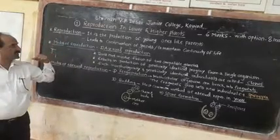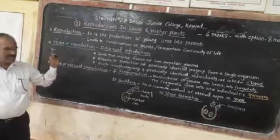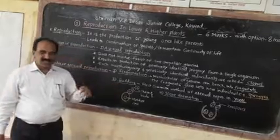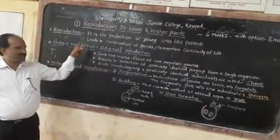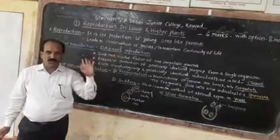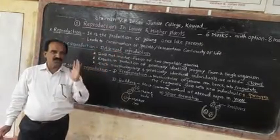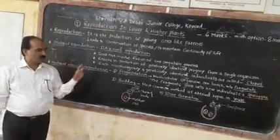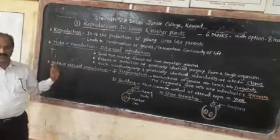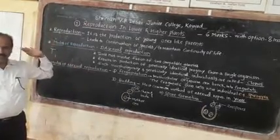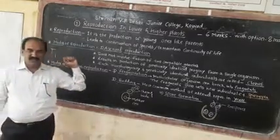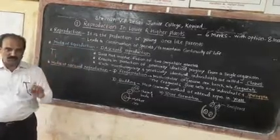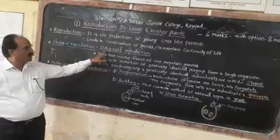Why is reproduction essential? It is necessary because it leads to the continuation of species and it helps to maintain continuity of life. Now let's discuss the modes of reproduction — how living organisms reproduce. Living organisms reproduce by two main modes. The first is asexual reproduction.